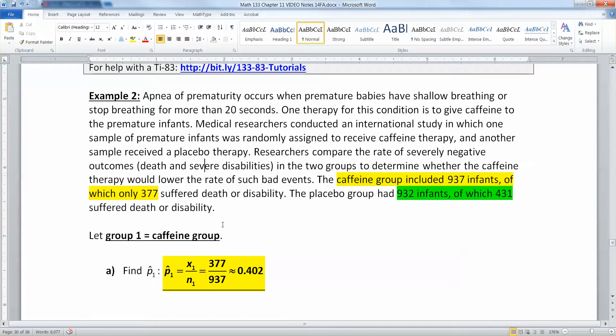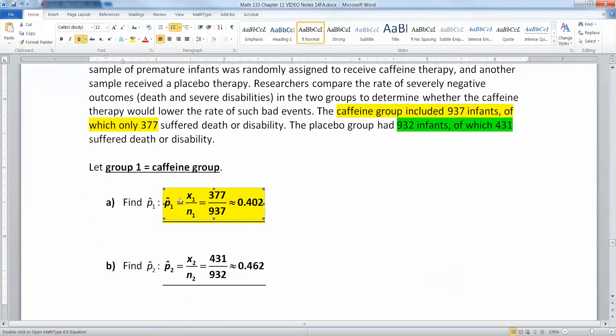All right, so I'm gonna let caffeine group be group 1 for no good reason, I just did. And if I do that then p1 hat is x1 over n1 which is 377 right here over 937 which is about 0.402 on the calculator. Then the other group is 431 out of 932 which gets you about 0.462.